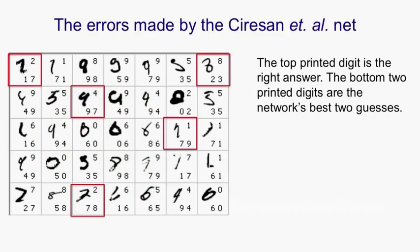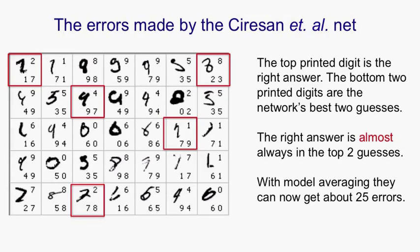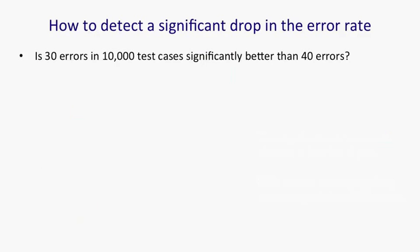So here's the 35 errors they got. The top printed digit is the right answer. And the bottom two digits are their top two answers. What you'll notice is that they nearly always get the right answer in their top two. There's only five cases where they don't. With some more work, by building several different models like this and then using a consensus to decide what the digit was, they managed to get down to about 25 errors. And that must be around about the human error rate.